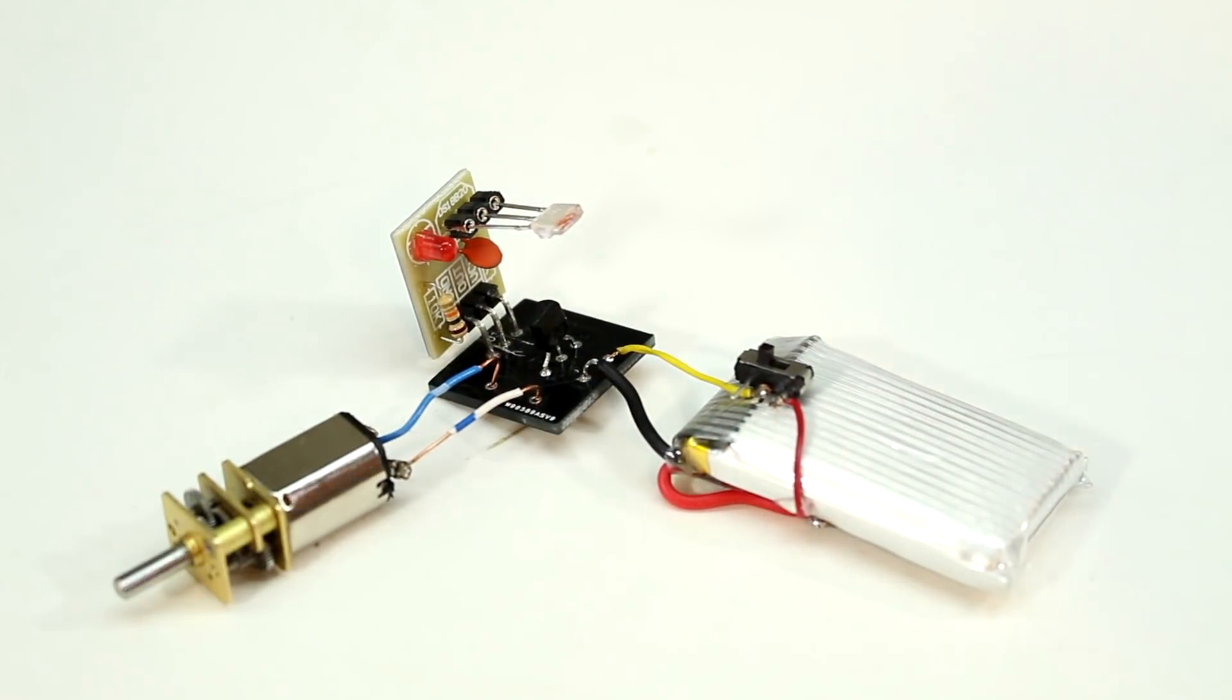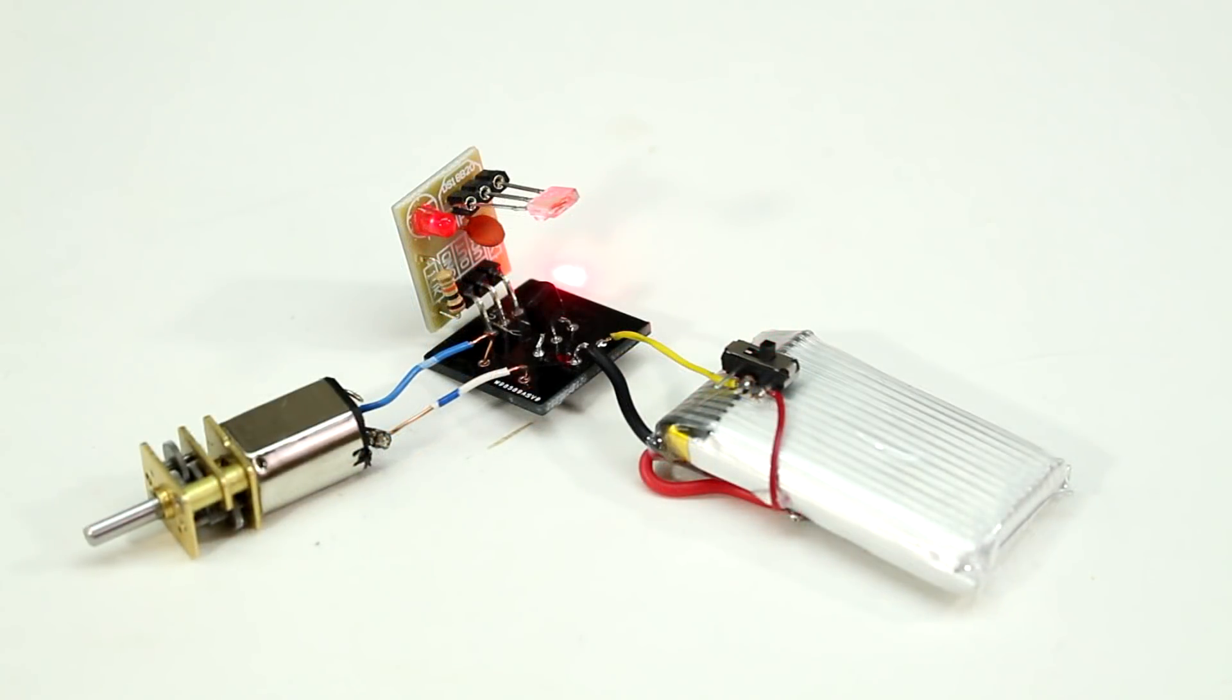Now anyone who's interested in the boring technical stuff, basically this works because we have an open circuit while the laser is shining and that's just because of the transistor. But when the laser breaks, the transistor acts as a switch to close the circuit. And once the circuit is closed, the motor starts spinning and everything goes into motion.